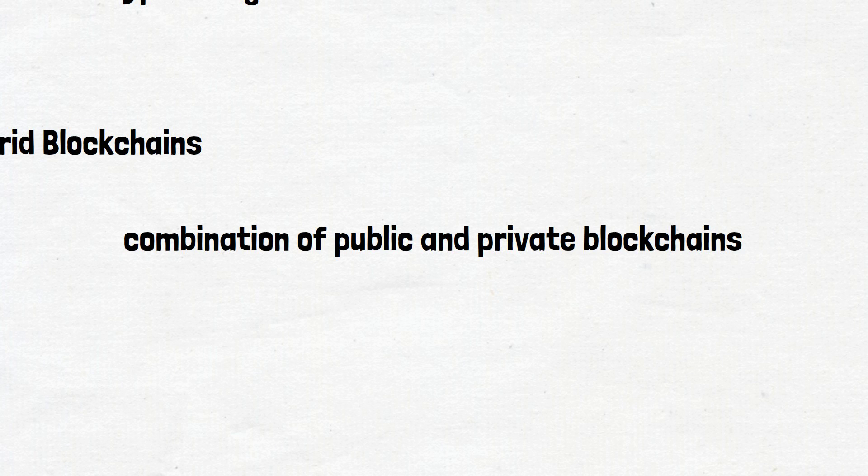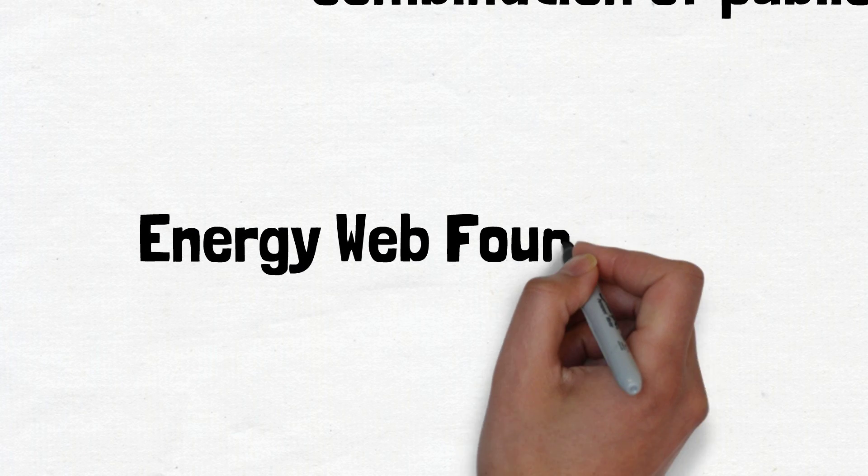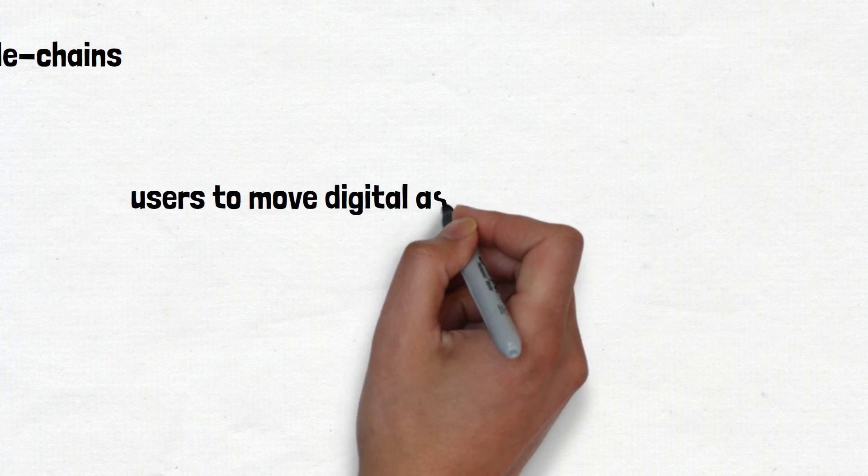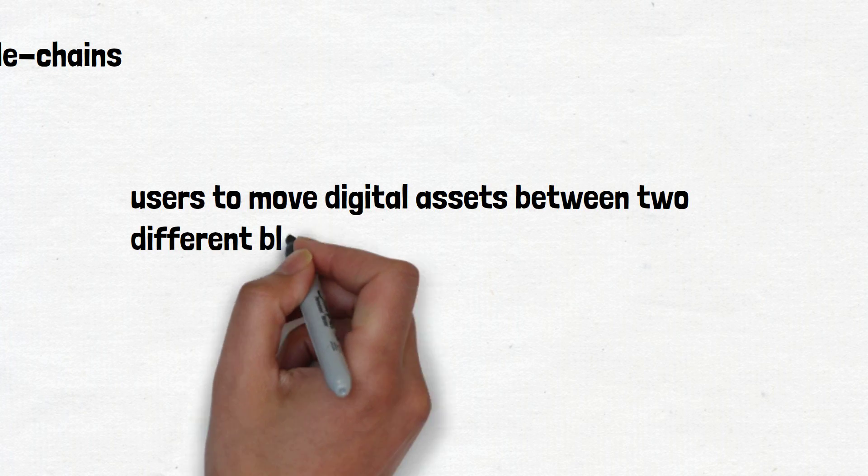Number four is side chains. A side chain is a blockchain running parallel to the main chain. It allows users to move digital assets between two different blockchains and improves scalability and efficiency. An example of a side chain is the Liquid Network.